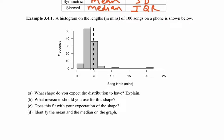Take a look at this example: we're looking at the lengths in minutes of 100 songs on an iPhone. We've taken a sample of 100 songs and made a histogram based on the lengths of each song in minutes. What shape would you expect? Looking at it, the shape is right-skewed — it has a lot of data in the lower end and then trails off.